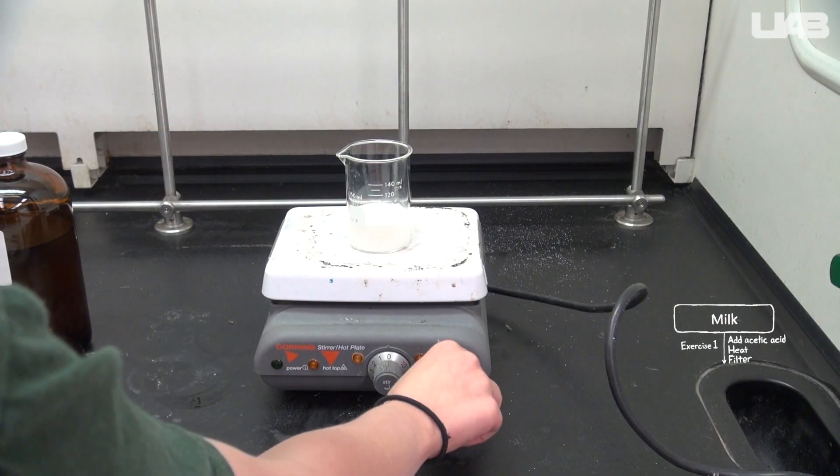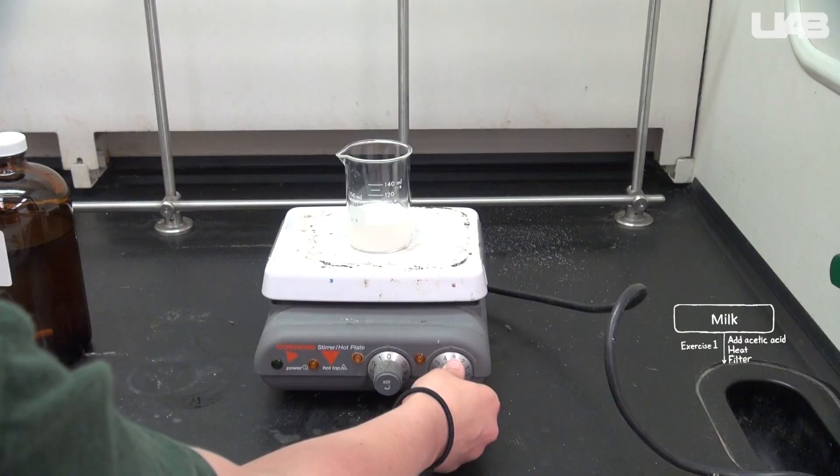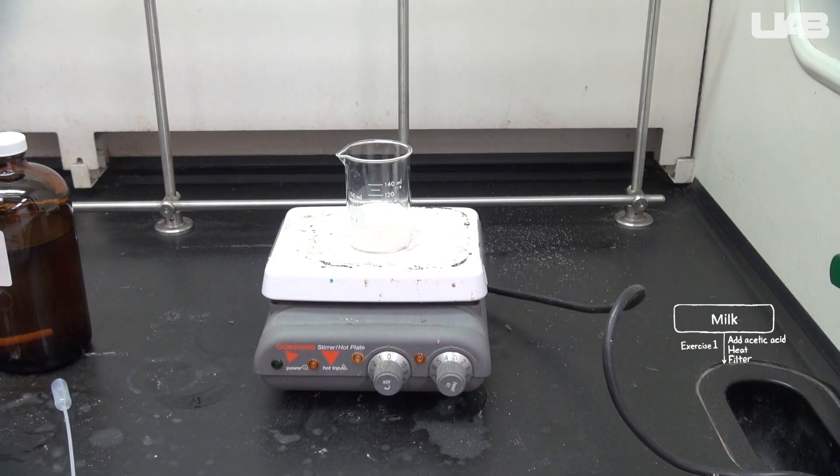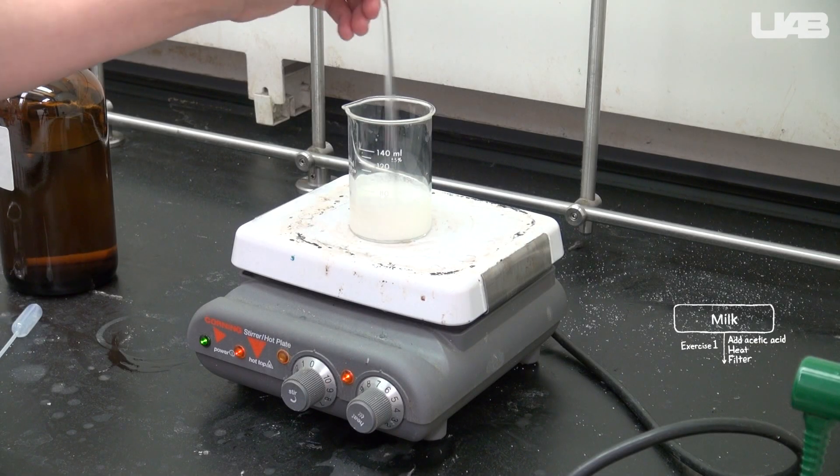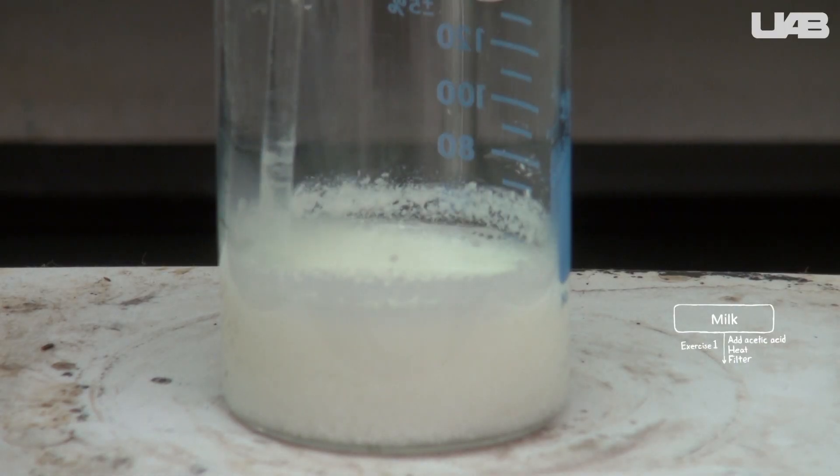Place it on the hot plate. It should be set at about three, but if it seems like it's not hot enough, you can turn it up slowly. Stir the mixture until the protein and fat precipitate. This may take a while.